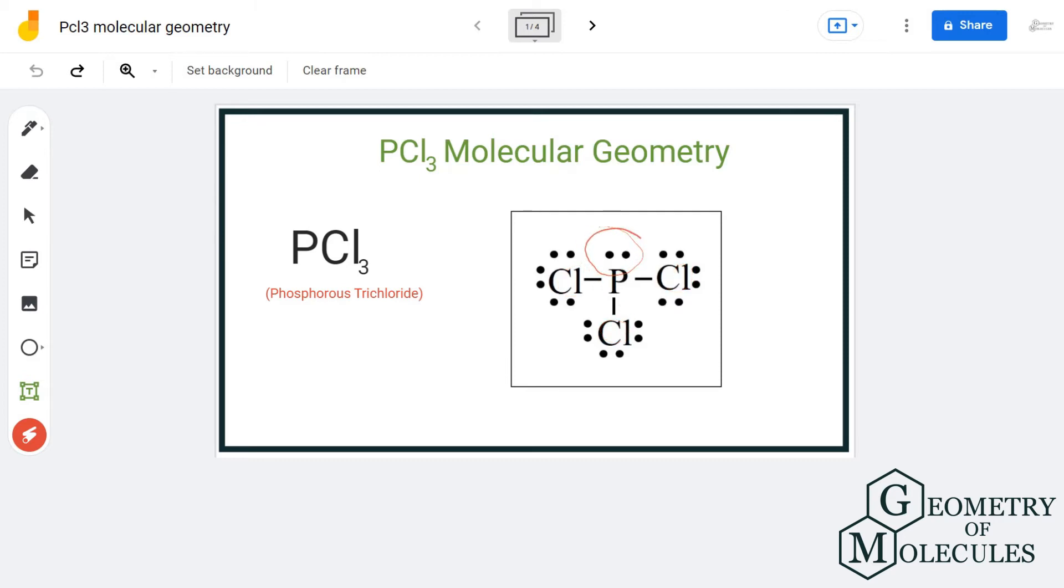Also, before jumping to the final molecular geometry, we will always look at the number of bonds the central atom forms and the lone pairs attached to it, as both affect the final molecular structure of the compound.